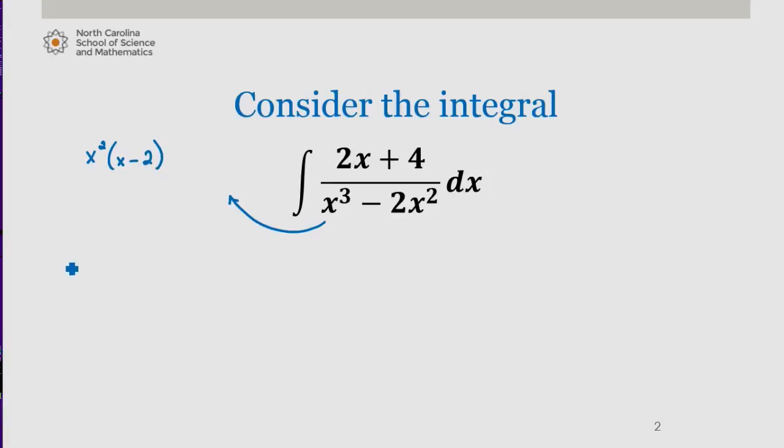So we're going to set up an equation that allows us to decompose this integrand. We're going to represent the factor of x on its own with A over x. But because x is a linear factor that repeats itself, we also need a term B divided by x squared.